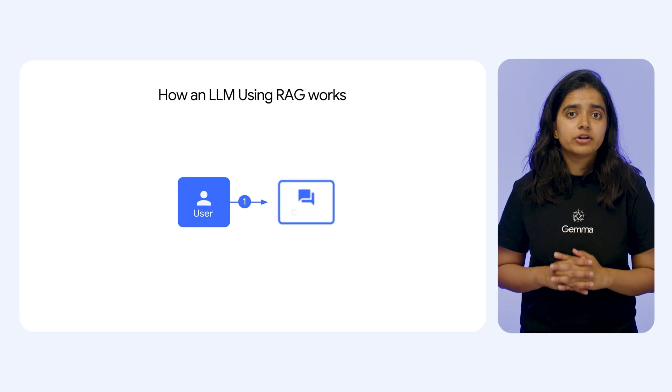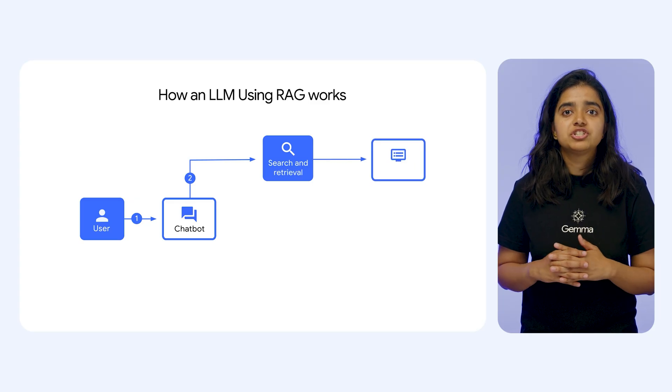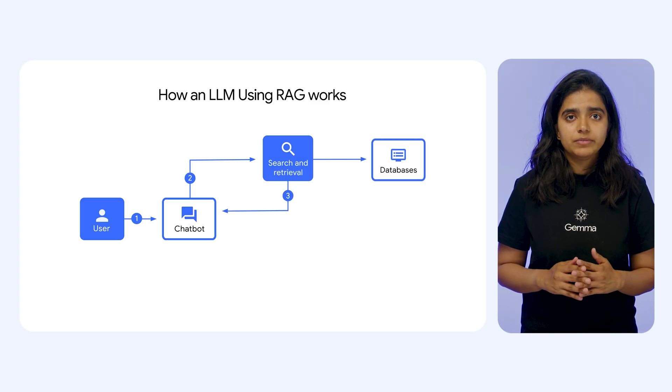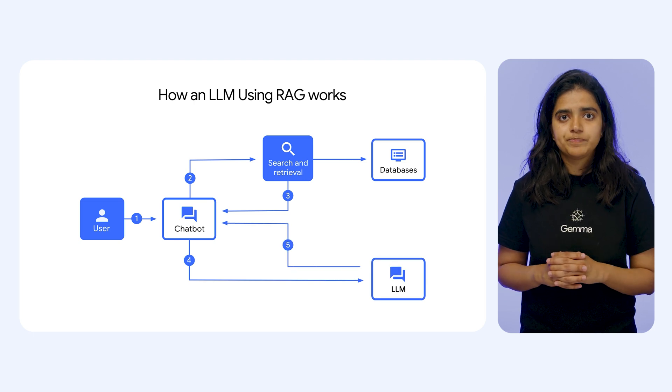For models with more limited context windows, a common technique for handling large inputs is retrieval augmented generation, or RAG. This involves a system that retrieves relevant chunks of information from an external knowledge base to feed to the model. With the advent of significantly longer context lengths, we can often fit an entire knowledge base directly into the model's context, potentially reducing the need for an external retrieval system. However, it's important to note that for even larger knowledge bases that still exceed the context limit, this capability can augment RAG by allowing us to feed more relevant chunks of information into the prompt at once.